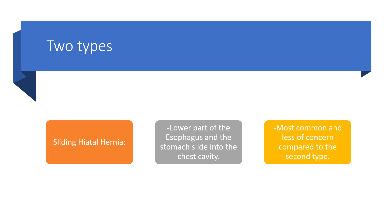As far as hiatal hernia is concerned, we have two types. The first is the sliding hiatal hernia. Here, the lower part of the esophagus and the stomach both slide into the chest cavity. This is the most common and of less concern compared to the second type.